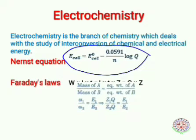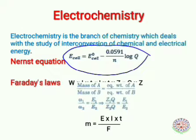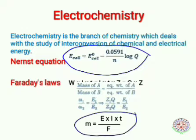Faraday's second law states that the ratio of weight deposited equals the ratio of their equivalent weights: W1/W2 = E1/E2. This equals Z1·Q / Z2·Q = E1/E2. We also have the equation: mass deposited = (E × I × T) / F, where E is equivalent weight, I is current, T is time, and F is Faraday's constant.